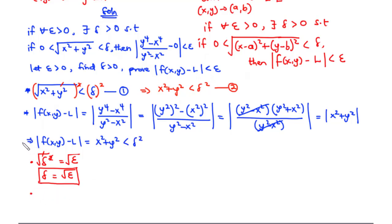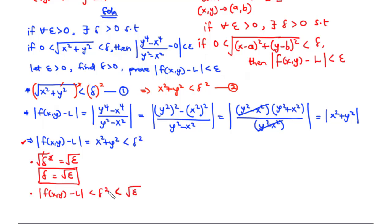Taking the square root of both sides, we have delta equals the square root of epsilon. We have found delta greater than 0 for all epsilon greater than 0 — notice that if epsilon is greater than 0, the square root of a positive number is still positive. Now, coming back to the inequality: the absolute value of f(x,y) minus L is less than delta², and substituting delta equals square root of epsilon, that is less than (√ε)² which equals epsilon. Hence, the absolute value of f(x, y) minus L is less than epsilon. Hence, the proof.